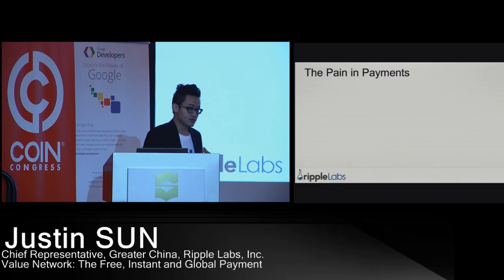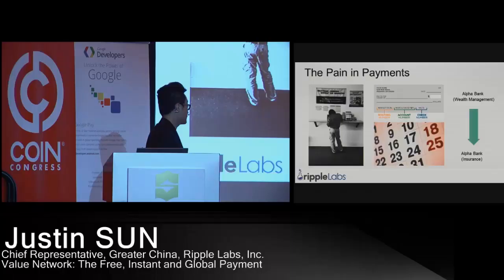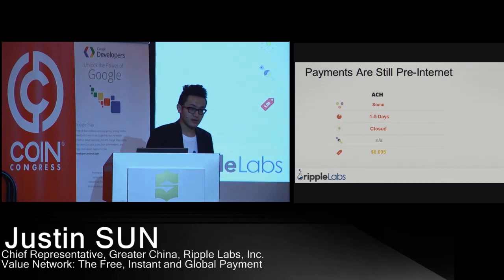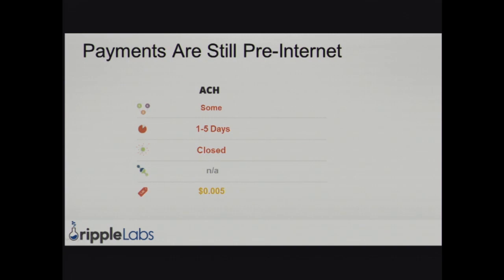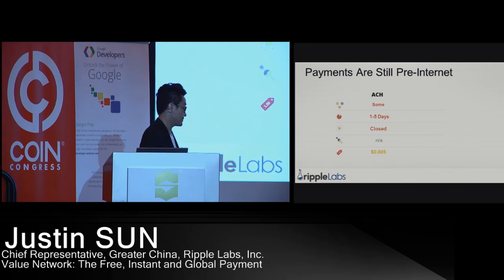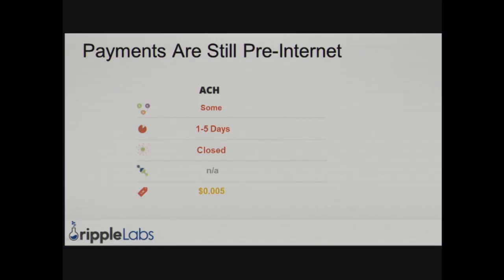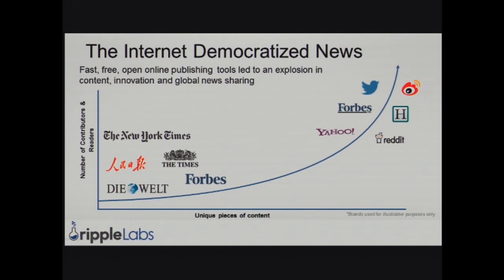Payment before the internet was very frustrating. We can see all these different channels to get payments — it's very difficult for people to finish. For example, in the US we use ACH for payments. The currency costs one to five days; if you pay $25 you might get it in one day, but if you pay $7 it may take three to five days. It is closed, not open. And there are very expensive fees to finish this payment.